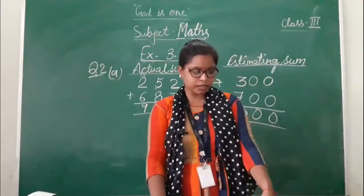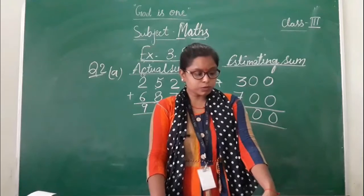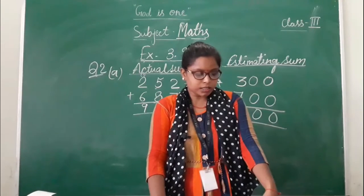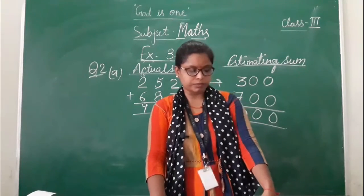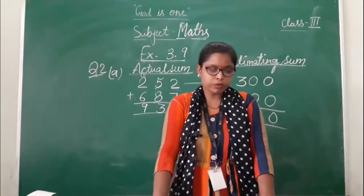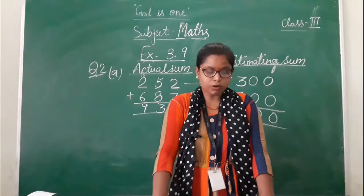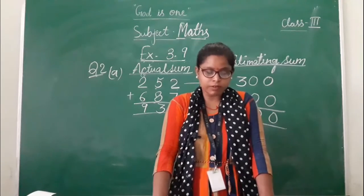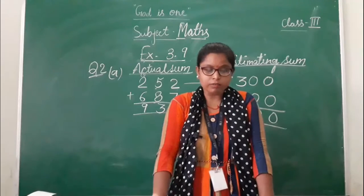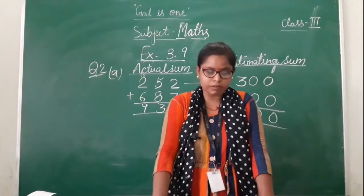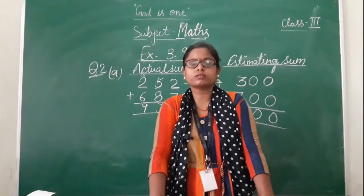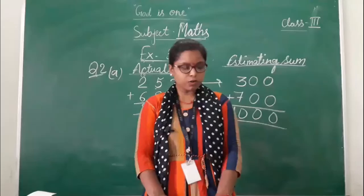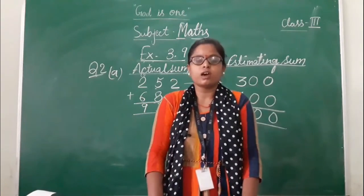Students, exercise 3.10. You are asked to frame a word problem for each statement. For example, 20 plus 7 equals 27. You can say: you have 20 toffees and your sister gives you 7 more toffees, so you have 27 toffees total. You have to create word problems like this and copy them. I will send you a PDF. Exercise 3.10 is your homework.